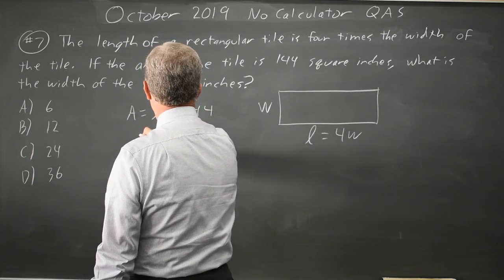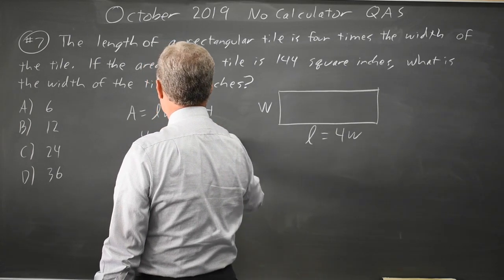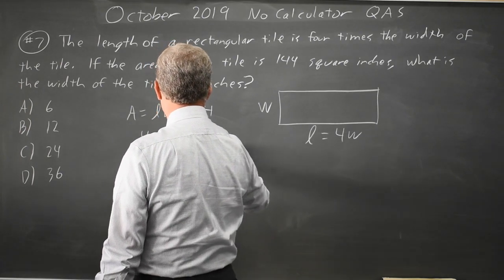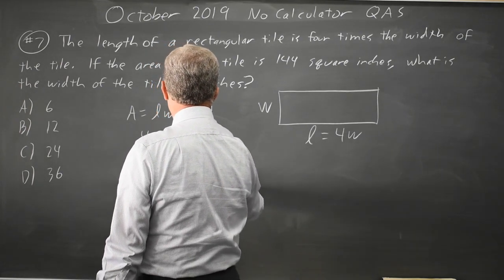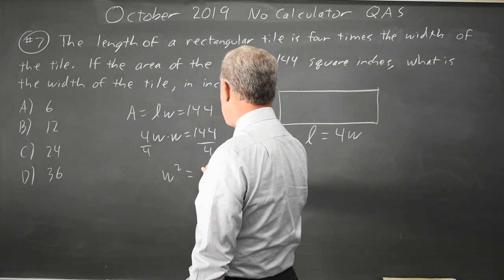So 4W times W is 144. Divide both sides by 4, we get W squared equals 144 over 4 is 36.